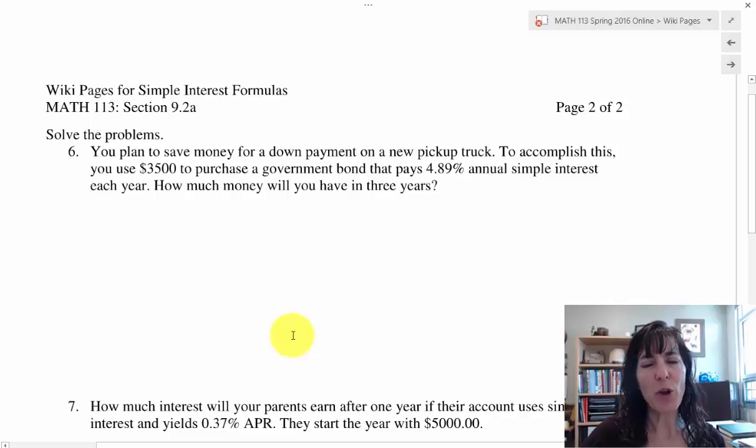I want to show you one of the two problems that you have to do for the 9.2a because I want to make sure that you know what I'm looking for when I grade your wiki pages when you have a formula that you need to use.